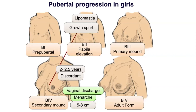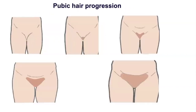Puberty in females progresses systematically with a gap of 2 to 2.5 years between breast stage 2 and breast stage 4. Any deviation from this is a cause of concern. Vaginal bleeding within one year of breast stage 2 indicates a hyperestrogenic state or peripheral precocious puberty.